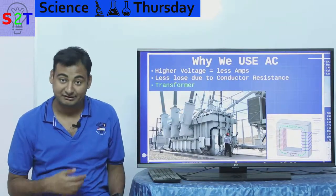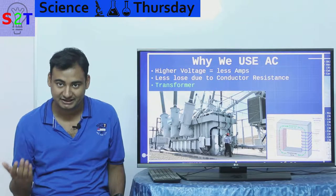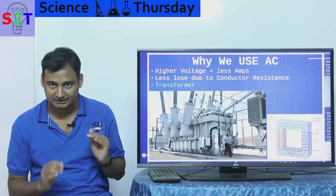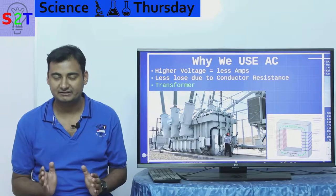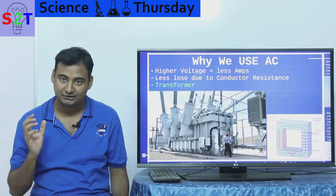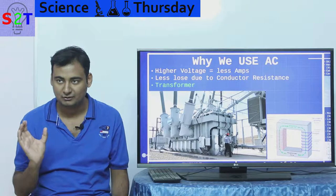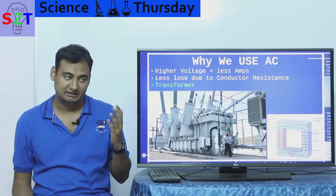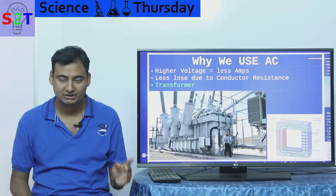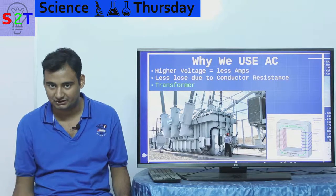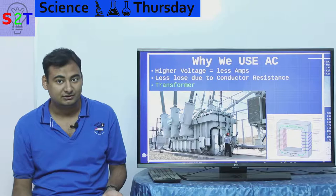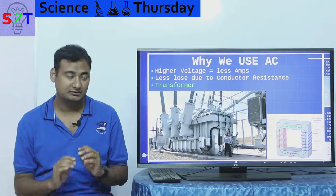First thing we have to understand, if I'm talking about DC, we have to understand why we use AC. There is a very serious relationship between voltage and amperage. If you have the same quantity of watts and you change any one, it will affect the other. So if you increase the voltage, it will automatically decrease the amperage if the wattage is the same. So why do we want to increase the voltage and reduce the amperage?